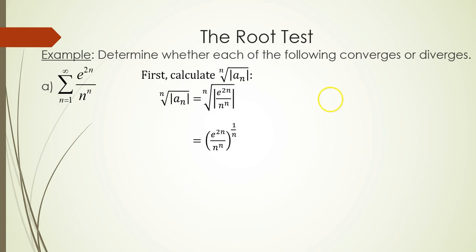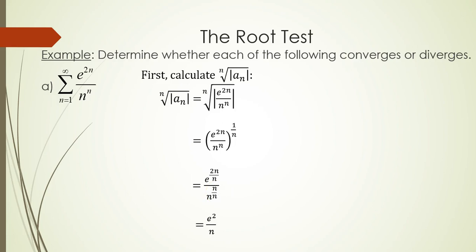Taking the nth root of something is like raising it to the 1 over n power. If you distribute the 1 over n and multiply it by the exponents, you get e to the 2n/n over n to the n/n power, which simplifies to e squared over n.